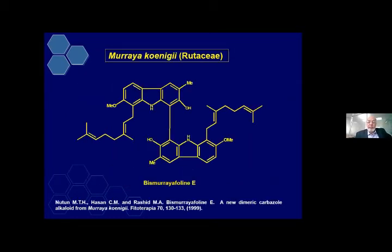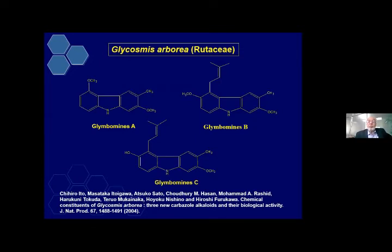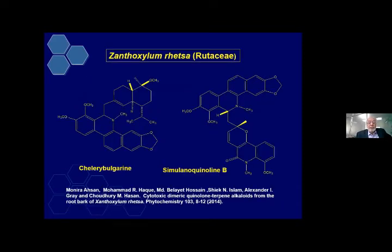Murraya koenigii, Rutaceae family — this is a dimeric compound, carbazole alkaloids. We have given it the name bismurrayafolinol. It is a trivial name we sometimes give when the actual names are very complicated — derived from the plant name. Published in Phytotherapy. Also from Clausena excavata, Rutaceae family, all three are new compounds, this work done with our Japanese counterpart and published in Journal of Natural Products. And Zanthoxylum rhetsa, Rutaceae family — we isolated some complicated structures with two groups coupled together, published in Phytochemistry, both new compounds with trivial names.